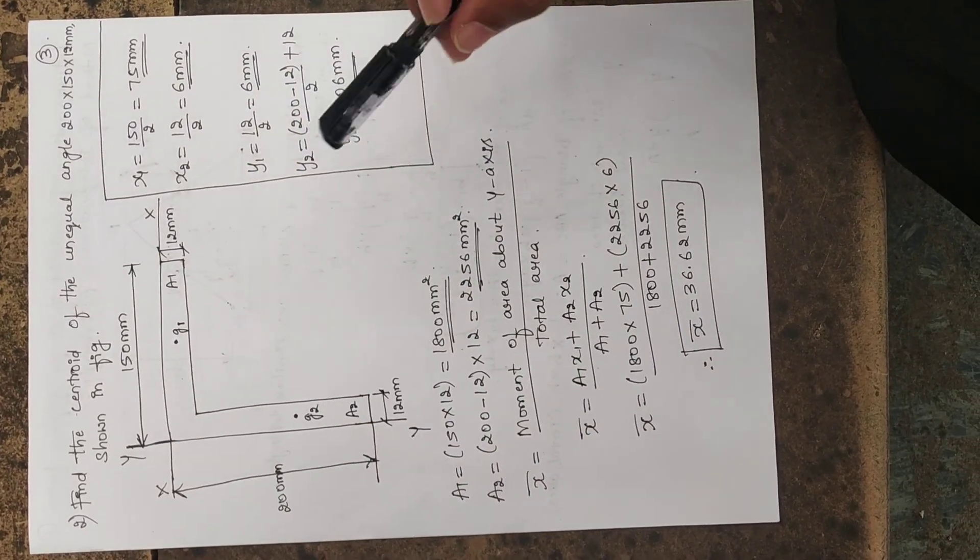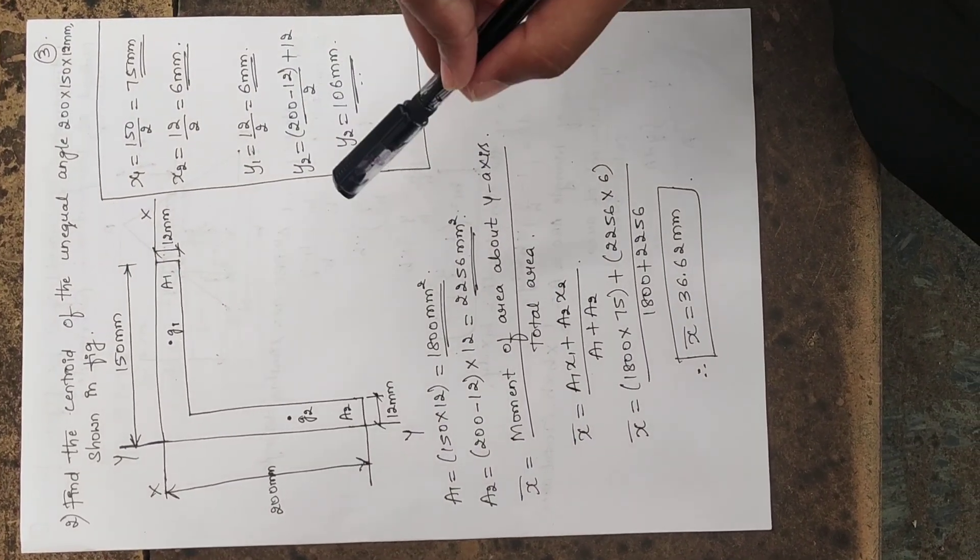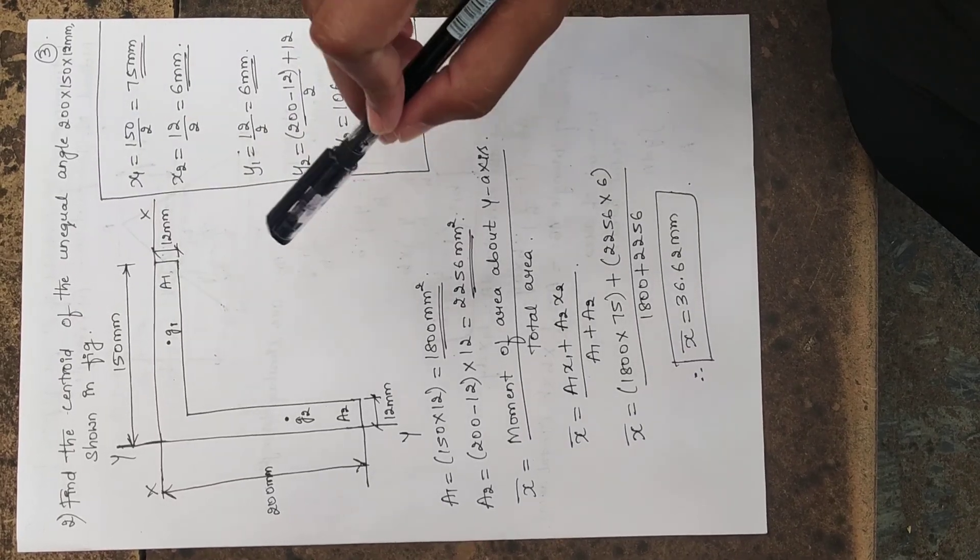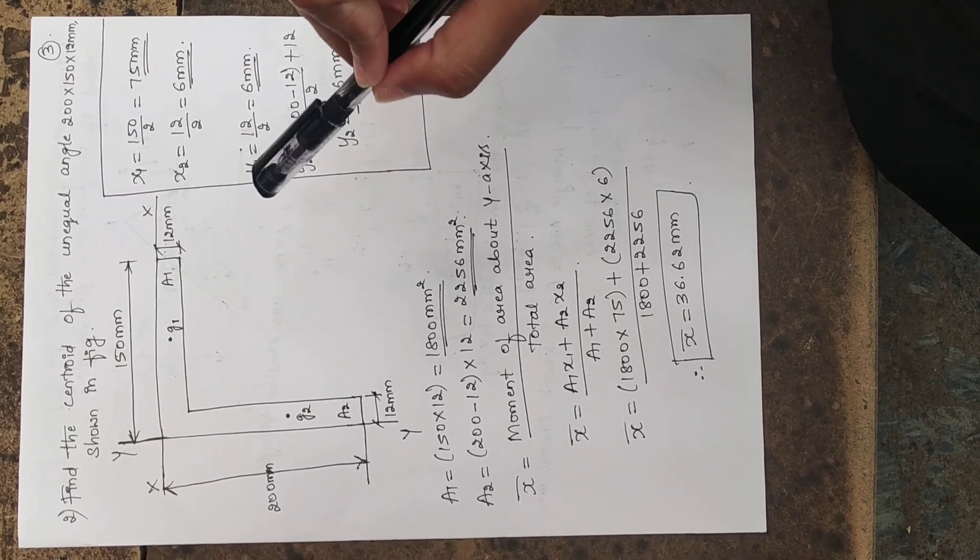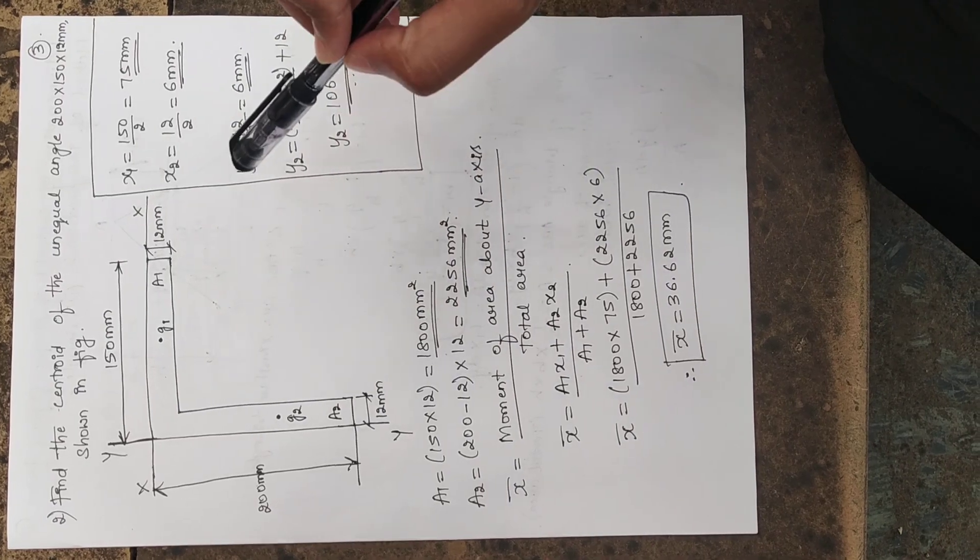So now, we have to find the centroid along x-axis as well as y-axis. That means, we will be getting the values of both x-bar as well as y-bar.